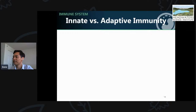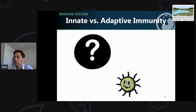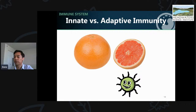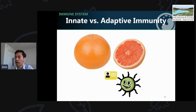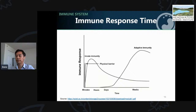Your immune system is incredibly complex, but it can be split into two branches: the innate and the adaptive immune system. Imagine you close your eyes and I hand you a spherical object. Using only your sense of touch, you can tell it's a fruit, but not a banana or an apple or a baseball bat. That's like your innate immune system — it can generally sense the categories of infections. Now say you open your eyes and I let you cut it open and taste it and smell it. Now you can tell it's a grapefruit because of its color and slightly bitter, sour flavor. That's like your adaptive immune system — it can specifically identify the exact bacteria or virus causing an infection.